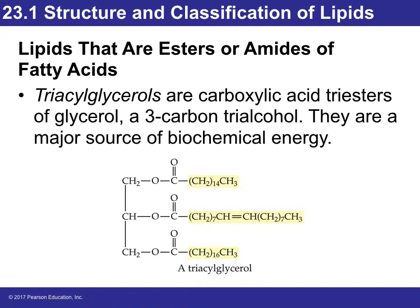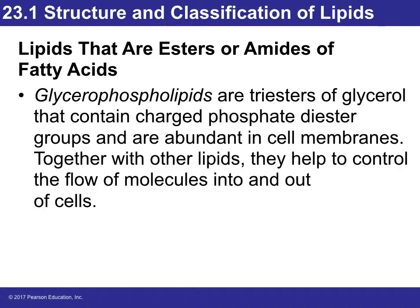Triacylglycerol and glycerophospholipids, also called neurophospholipids, are extremely important and abundant in cell membranes. A large part of this chapter will look at the structure of cell membranes, whose role is mostly to control what goes in and what goes out of the cells.